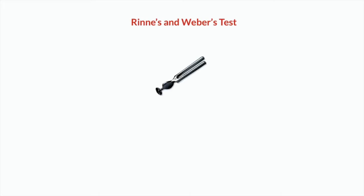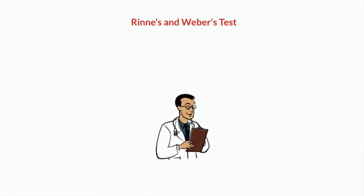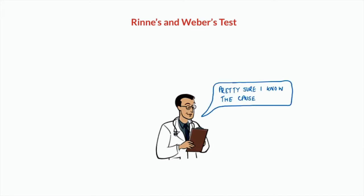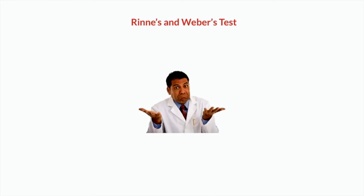In this short video tutorial we're going to have a look at the Rinne's and Weber's test. These are a couple of tests involving the use of a tuning fork that can be used to supplement your examination when a patient presents with hearing loss. There are many different causes for why someone might present with hearing loss, and for the most part from the history alone you will probably be able to reach an appropriate diagnosis. However, sometimes you may require some further steps in your examination to try and localize the pathology.